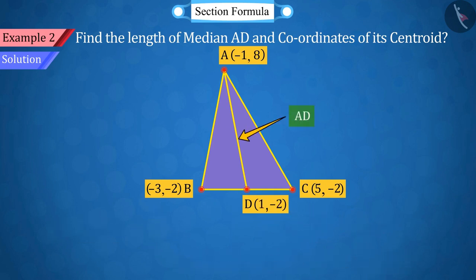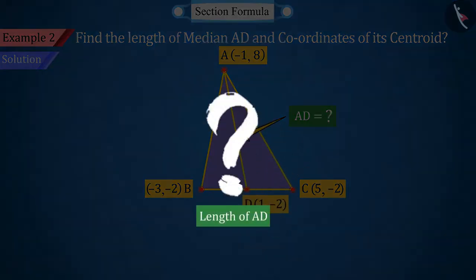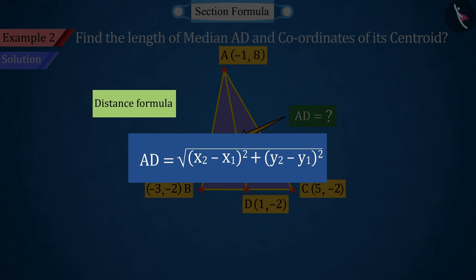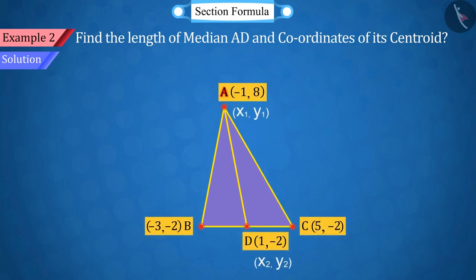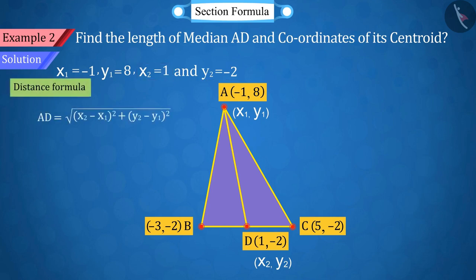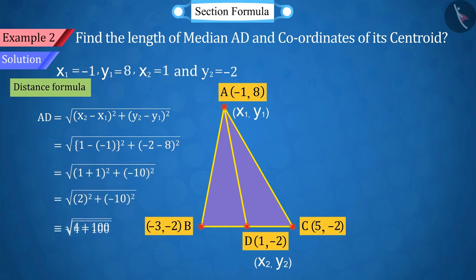Since the length of the median AD is to be determined, so can you now find the value of AD? Well done. Here we use the distance formula between two points. Where the coordinates of point A are x1 equals -1, y1 equals 8, and point D are x2 equals 1, y2 equals -2. The values of x1, y1, x2, and y2 are placed in the distance formula. Solving which, the value of AD is √104 units.